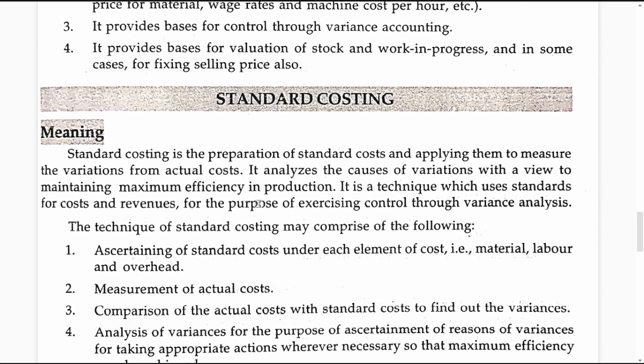Standard costing involves determination of cost before a particular activity is carried out. After determining the cost, it involves measuring the actual performance in terms of cost, and the actual cost can be compared with the standard to identify and understand the causes for variations between the actual cost and the standard cost set for a given activity.